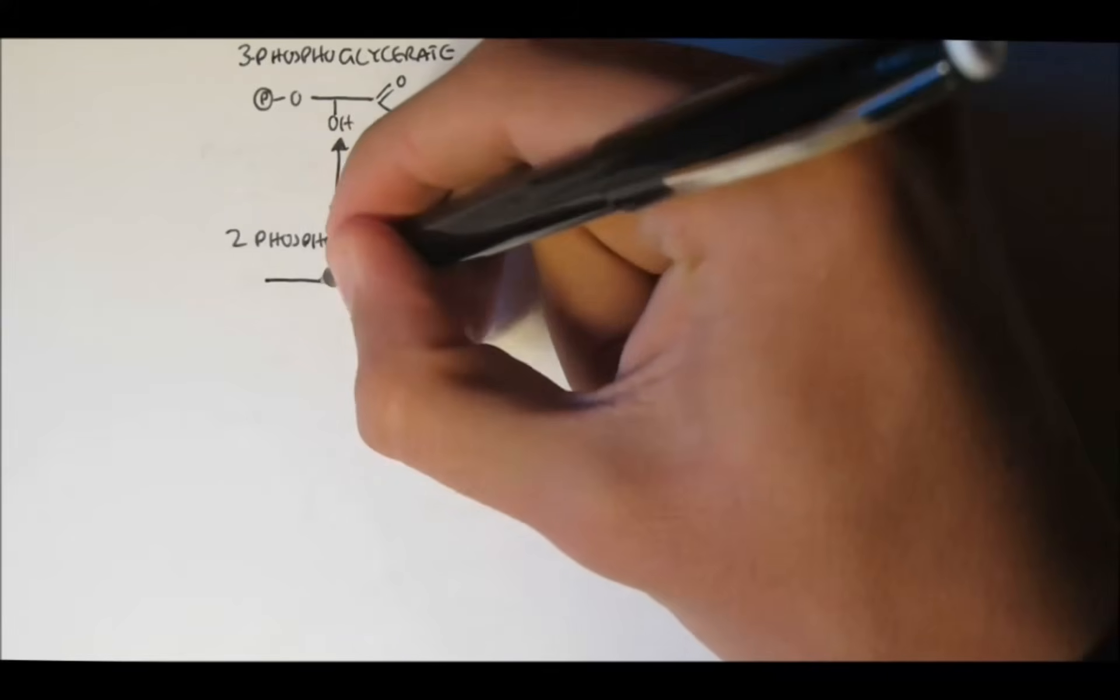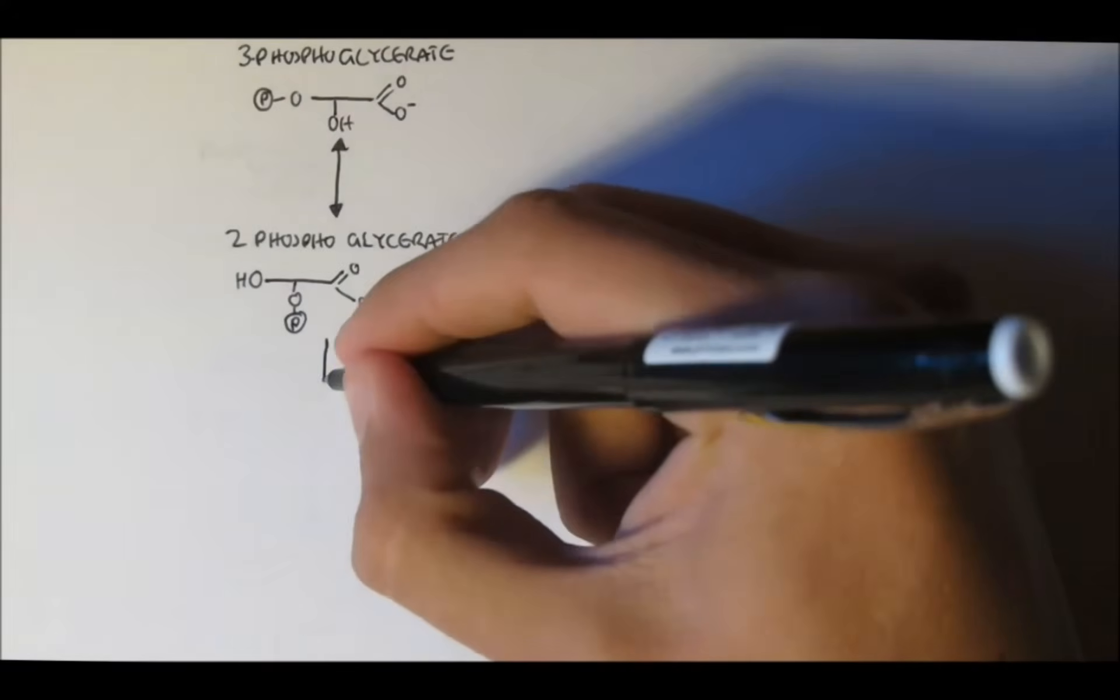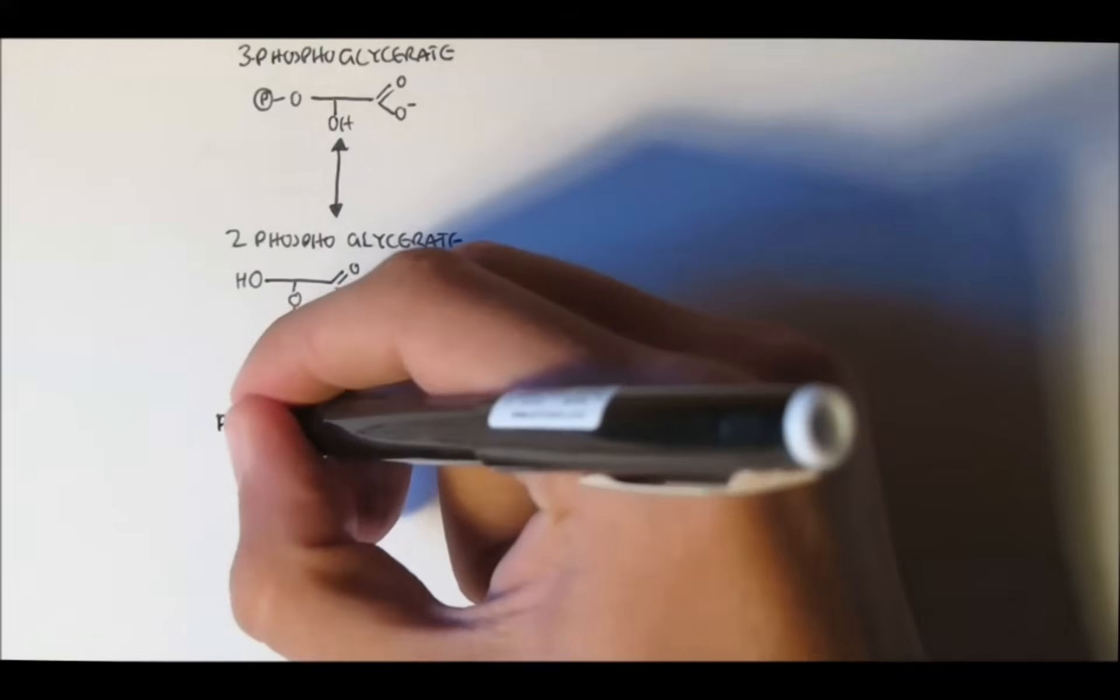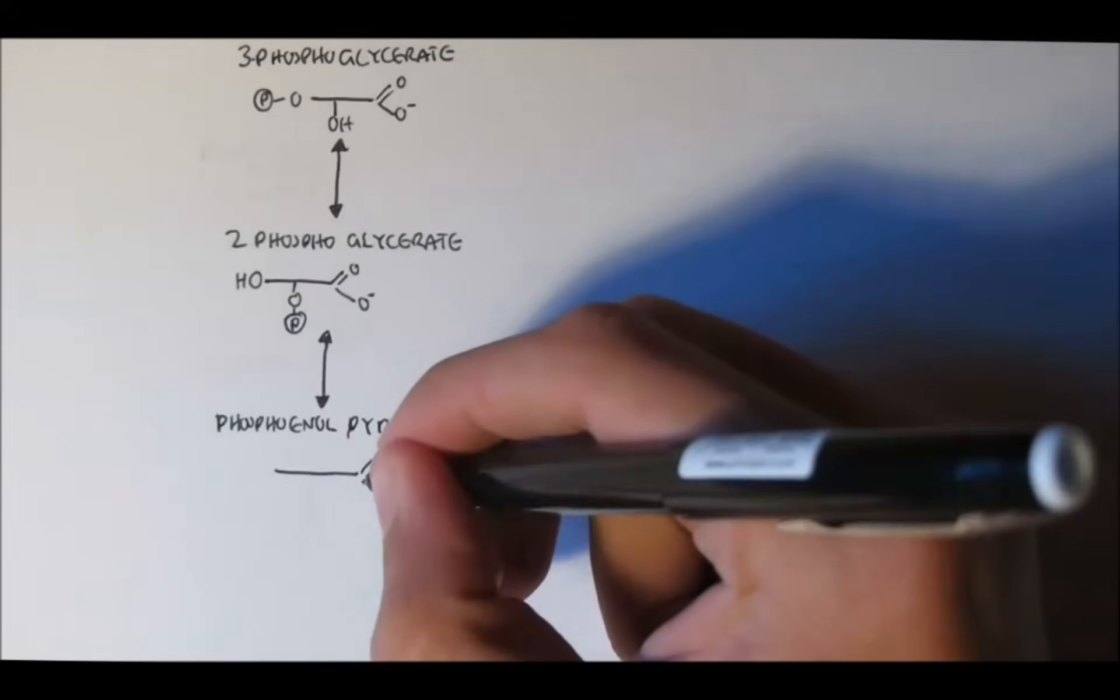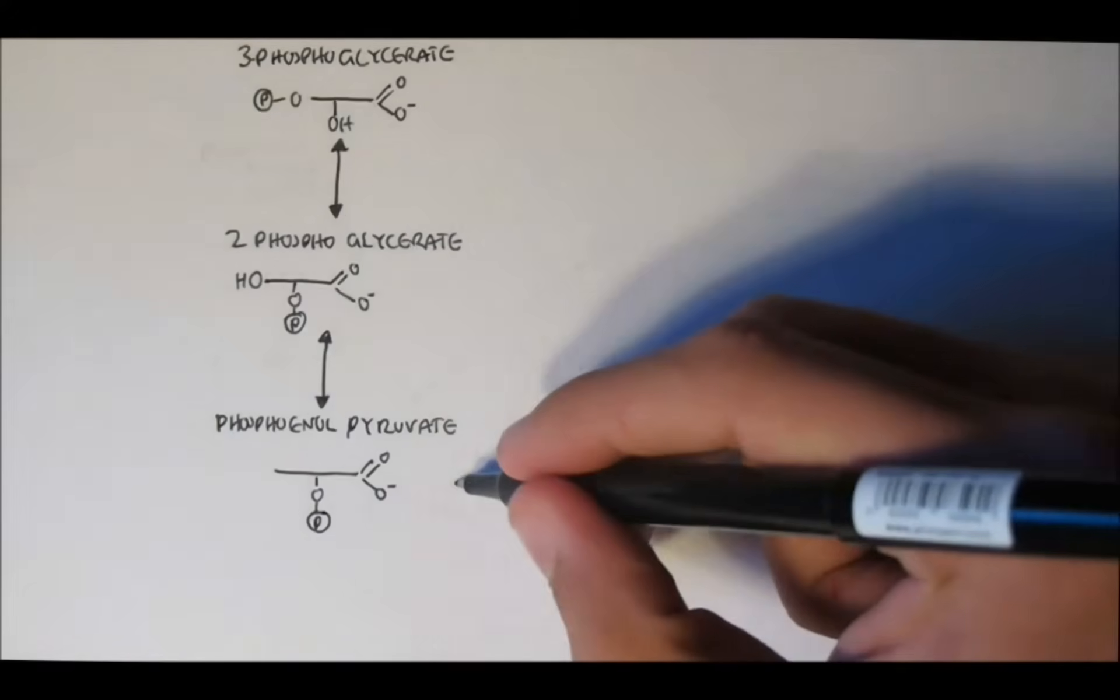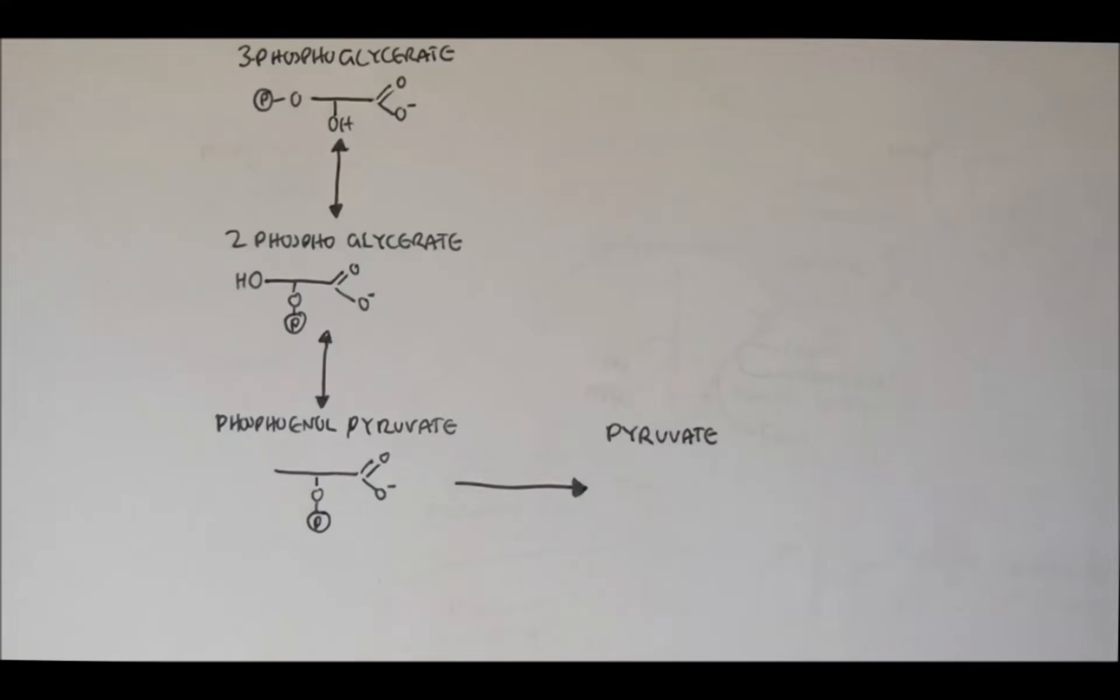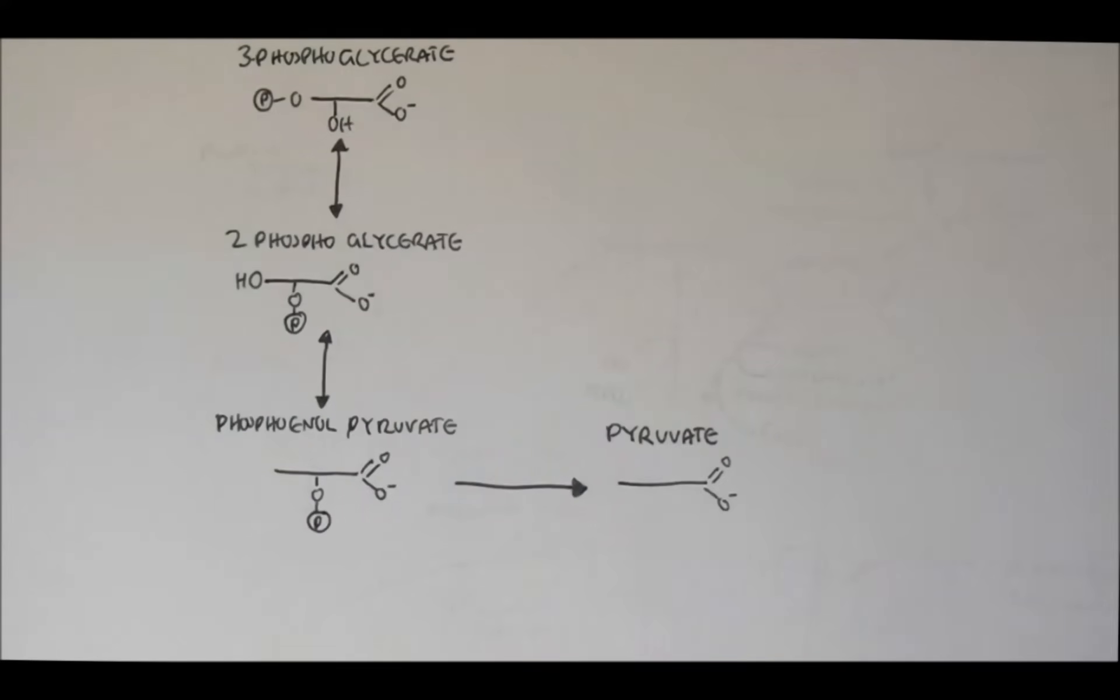So 2-phosphoglycerate will then dehydrate, removal of water, to form phosphoenolpyruvate. And finally, phosphoenolpyruvate will dephosphorylate to become pyruvate, dephosphorylation, the removal of the phosphate of the second carbon. Now pyruvate is the final product of glycolysis.